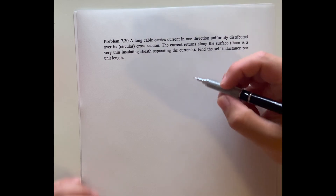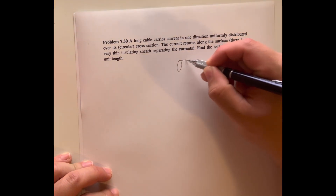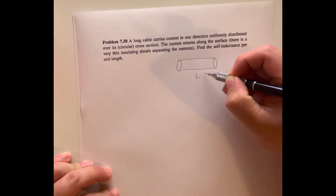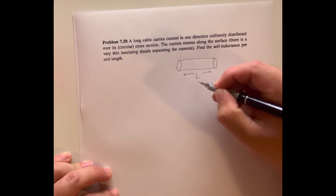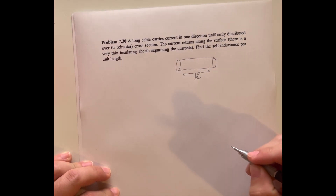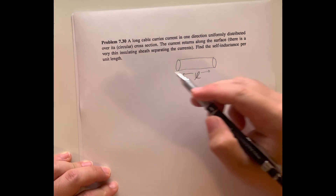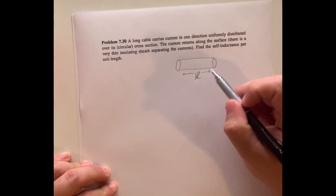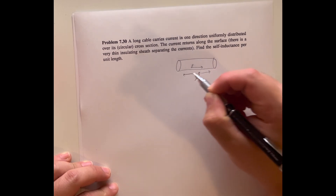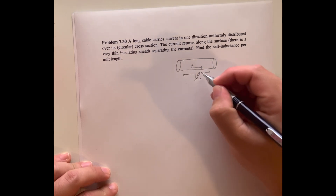Drawing the figure, we have a cable with a length L. We have a current over its circular cross section that is uniformly distributed, and we then have that current return along the surface.